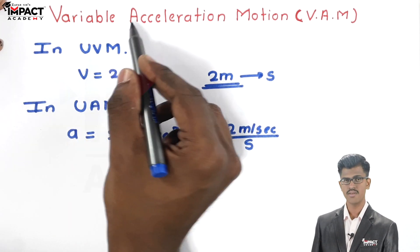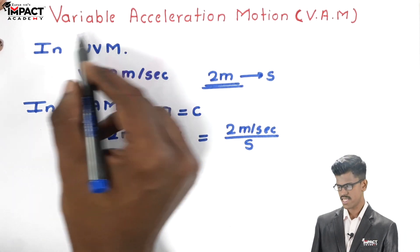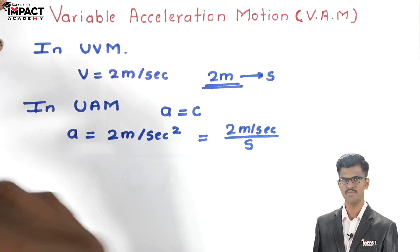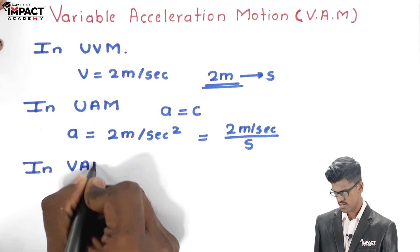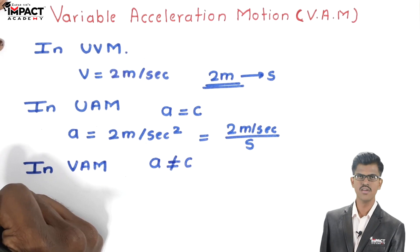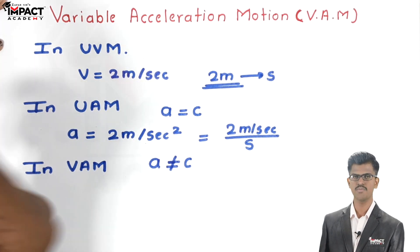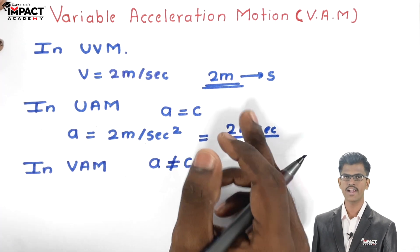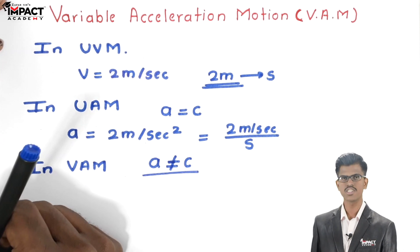Today we see what is variable acceleration motion. As the name suggests, in this motion the acceleration of the particle keeps on changing. Here the acceleration is not constant, means the rate of change of velocity with respect to time keeps on changing. Every second the velocity of the particle may increase or decrease, because acceleration is not constant.